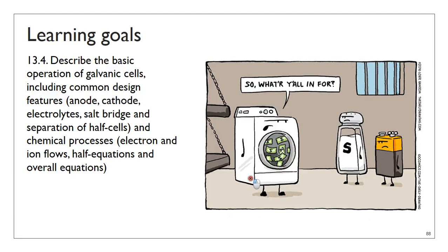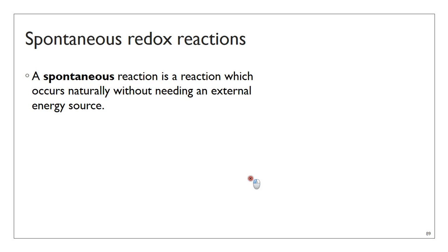Hello everyone. In this video I will be introducing you to the idea of a galvanic cell, as well as describing the basic operation, the common features, and the chemical processes that occur in a galvanic cell. Let's start with a new definition: the idea of a spontaneous reaction. In VCE you can define a spontaneous reaction as a reaction which occurs naturally without needing an external energy source. If you mix two things together and observe a reaction without needing to apply electricity, for example, then it is a spontaneous reaction.